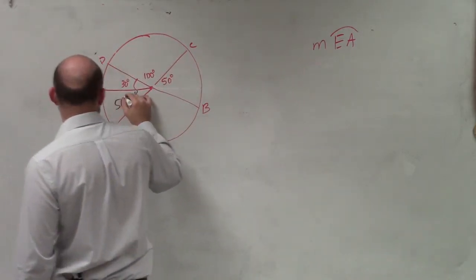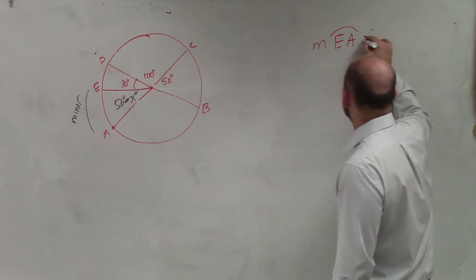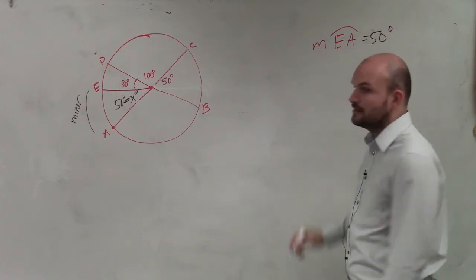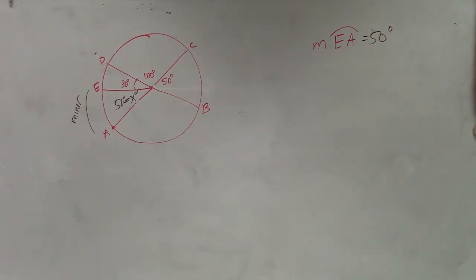So since x is 50 degrees, this measurement of my minor arc is also 50 degrees. So we had to use vertical angles in this example. It's called a little bit of thinking.